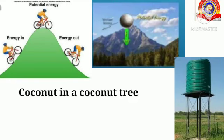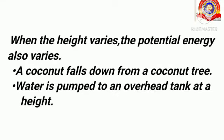Let's see some examples of potential energy. Potential energy is the energy possessed by a body by virtue of its position. Every object which is at a height possesses potential energy — for example, a coconut in a coconut tree, water stored in a tank at a height, a cyclist or a stone at the top of a hill. All these possess potential energy due to their height or position.